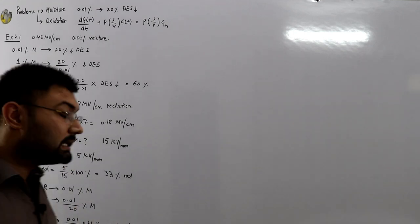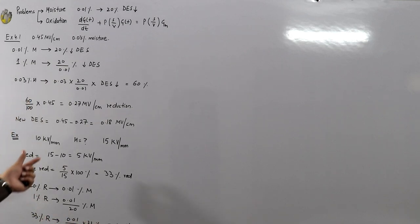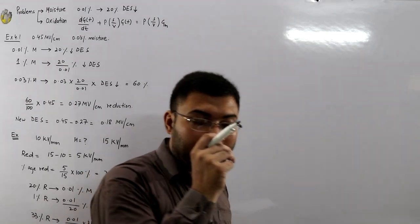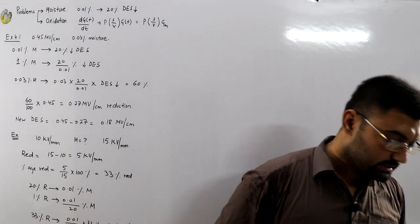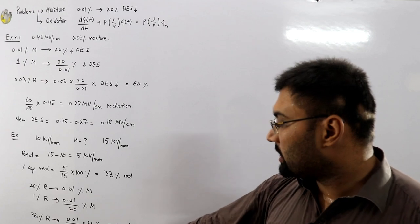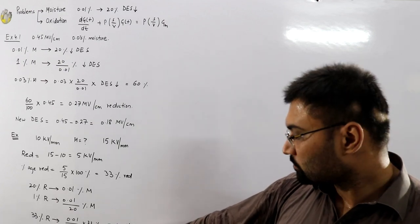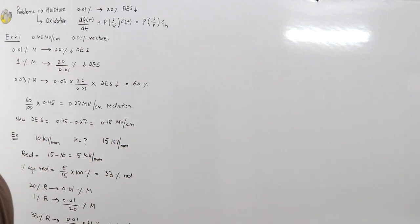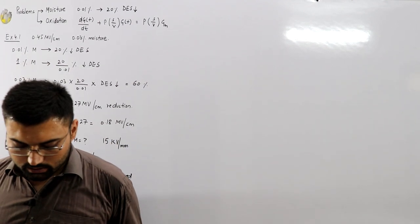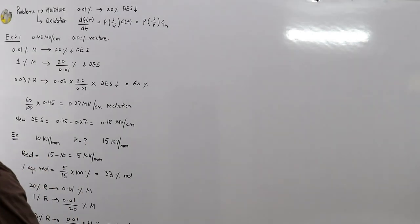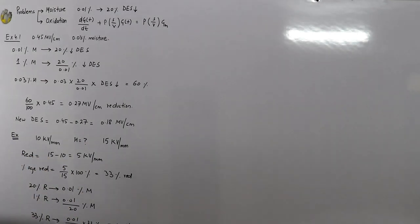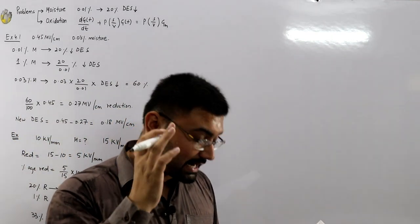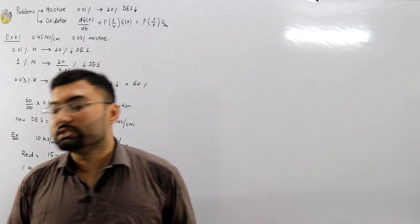10 kilovolt per millimeter is the limit for transformer oil. If the dielectric strength is less than this, you cannot use it. Similarly, if the moisture content is even a point greater than this, you don't have to use it. We've already seen the techniques — when the dielectric strength is reduced, you heat it up to exclude the trapped moisture, then do the filtering.